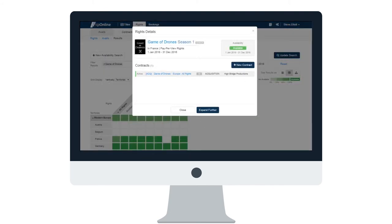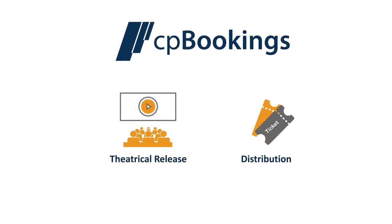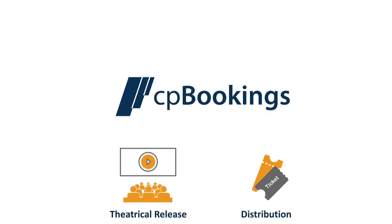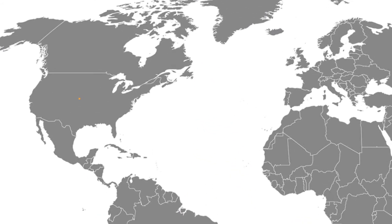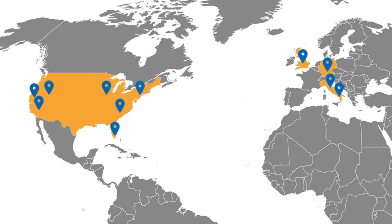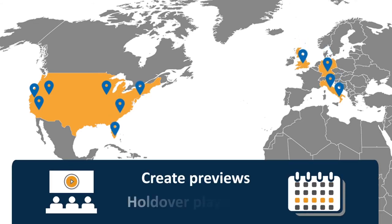The CP Bookings application is an intuitive tool to manage the theatrical release and distribution process from start to finish. You can easily produce release plans for each movie across multiple territories and cinemas. You can create previews and holdover play weeks, and confirm once the final schedule is known.